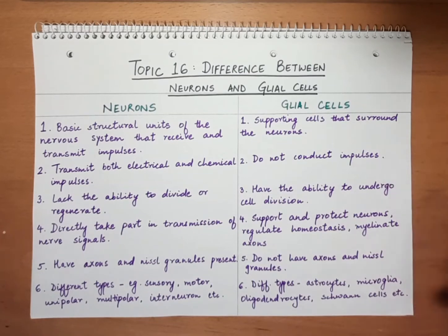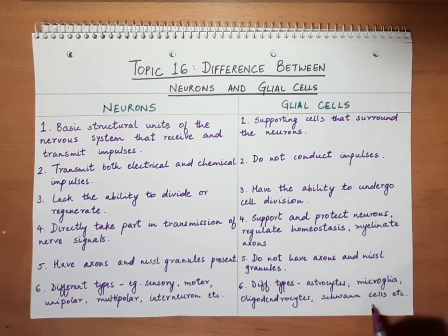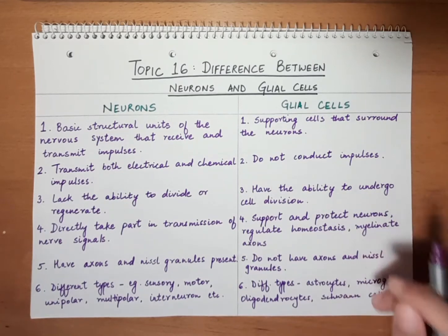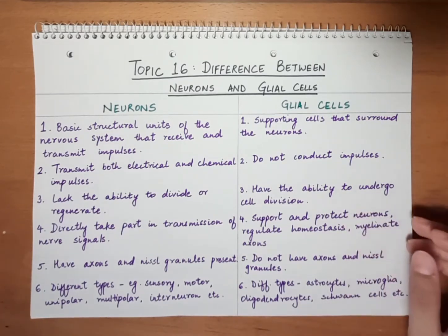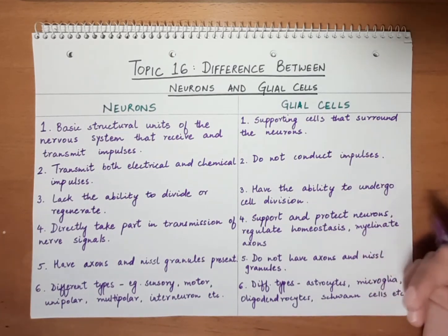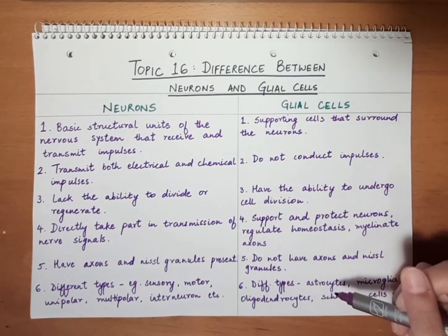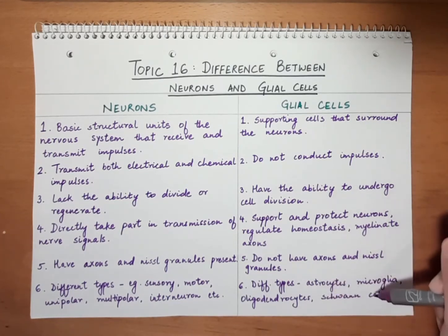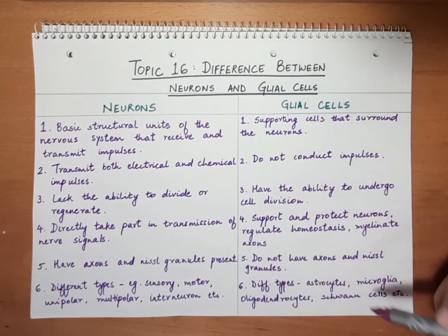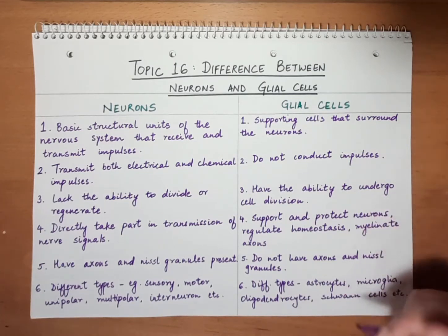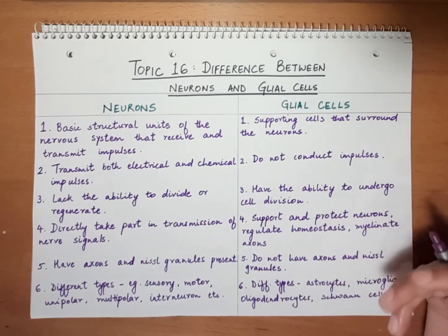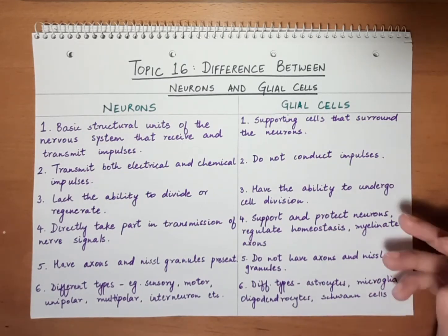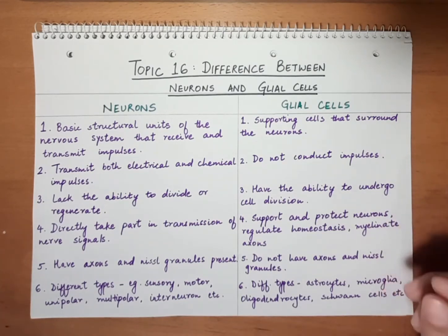On the other hand, glial cells are also of different types: astrocytes, microglia, oligodendrocytes, Schwann cells, etc. In the central nervous system, oligodendrocytes myelinate axons, whereas Schwann cells myelinate axons in the peripheral nervous system. Astrocytes are specifically involved in the formation of the blood-brain barrier, while microglia are primarily involved in defense mechanisms and protecting neurons.